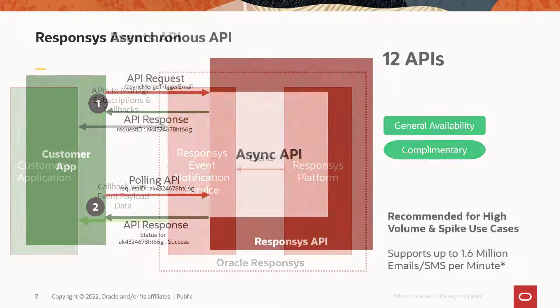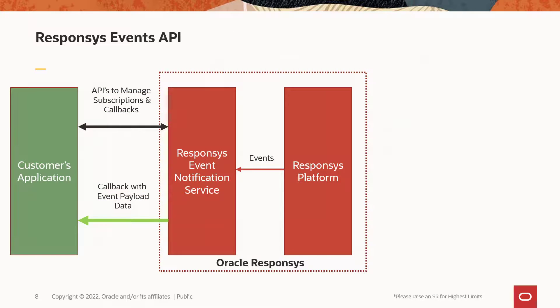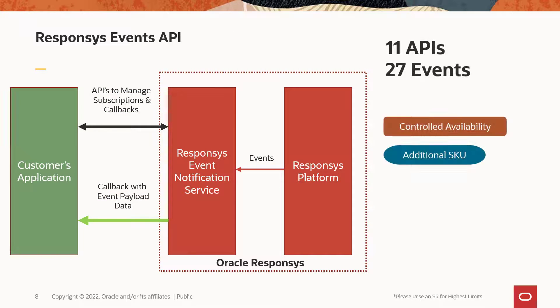Real-time campaign event data is available with the Responses Event Notifications API endpoints. Using this service, when events happen in Responses, Responses notifies you at a URL you specify. They are recommended for real-time event management in an external application.